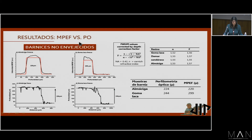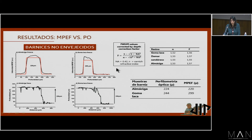Lo que hicimos también fue comparar las medidas de fluorescencia por excitación multifotónica y perfilometría óptica en barnices no envejecidos. Pudimos obtener que existía una correlación. Cabe decir que en las medidas por perfilometría óptica se tiene que hacer una corrección llamada el factor F, que tiene en cuenta el índice de refracción de los materiales y la apertura numérica del objetivo. Una vez corregido, pudimos observar que los valores obtenidos entre ambas técnicas son similares. Por lo tanto, quedaría validada la técnica.